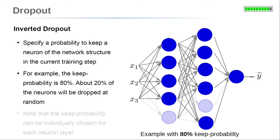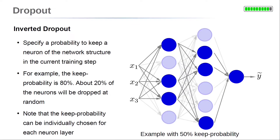A keep probability of 80% means a neuron is dropped with a chance of 20%. So on average, about 20% of the neurons will be dropped at random for an iteration step. The keep probability can be chosen individually for each neuron layer. Usually, the output neurons have a 100% keep probability to match the target values, so dropout is applied to hidden layers only.